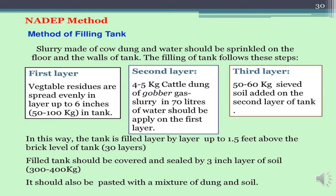For the method of filling the NADEP tank, slurry made of cow dung and water should be sprinkled on the floor and walls of the tank. The tank is filled in 3 layers. In the first layer, vegetable residues are spread evenly to a depth of 6 inches, about 50 to 60 kg per layer. In the second layer, 4 to 5 kg of cattle dung from a gobar gas slurry and 70 liters of water are applied. In the third layer, 50 to 60 kg of sieved soil is added. The tank is filled layer by layer up to 1.5 feet above the brick level, maintaining about 30 layers. The filled tank is covered and sealed with a 3-inch layer of soil (300 to 400 kg) and pasted with a mixture of dung and soil for better decomposition inside.